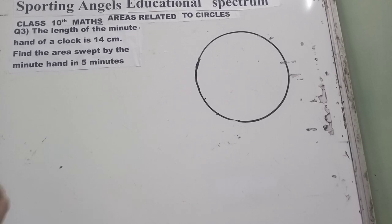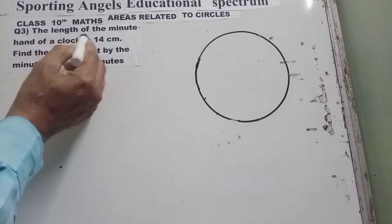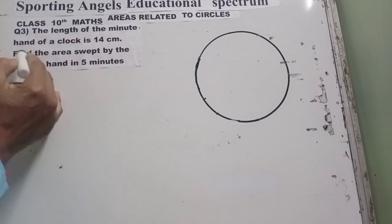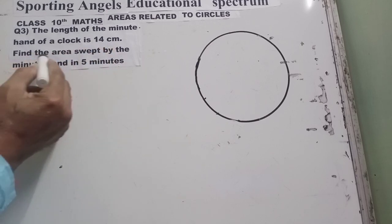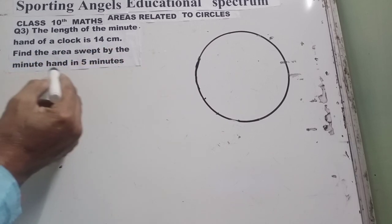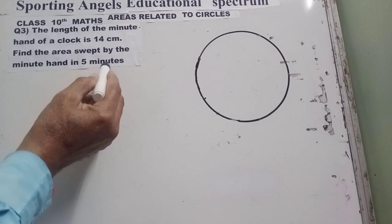Let me read out the question for you. The length of the minute hand of a clock is 14 cm. Find the area swept by the minute hand in 5 minutes.